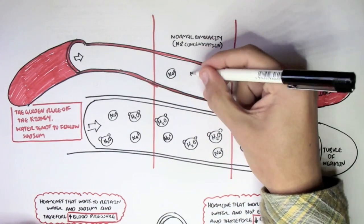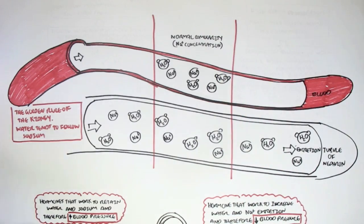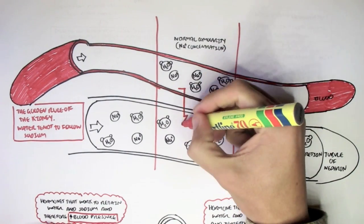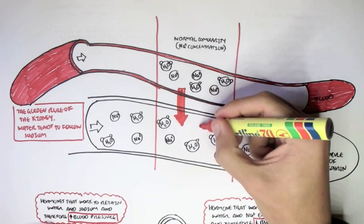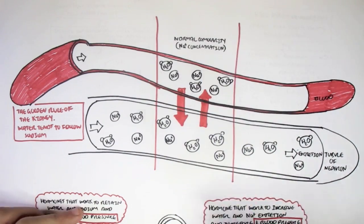When we have normal osmolarity and normal sodium concentrations, there can be secretion or reabsorption of sodium and water, but this stays normal. So we have normal blood pressure.